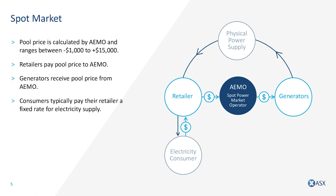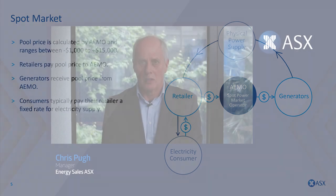The retail reference price is also used by ASX to settle all electricity derivatives. The spot market prices every five minutes can vary between minus a thousand and plus fifteen thousand one hundred dollars per megawatt hour. AEMO, as market operator, dispatches capacity in the most cost-effective way to meet real-time demand. The marginal highest price generator provides the electrons for the last amount of demand in each five-minute interval, and all generators receive this highest marginal price.